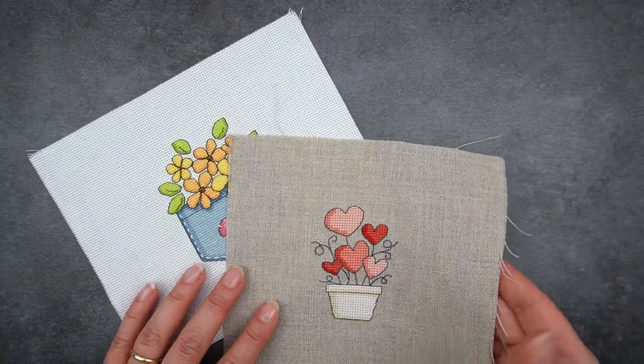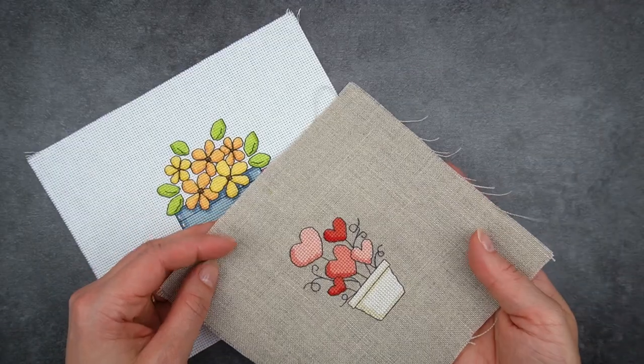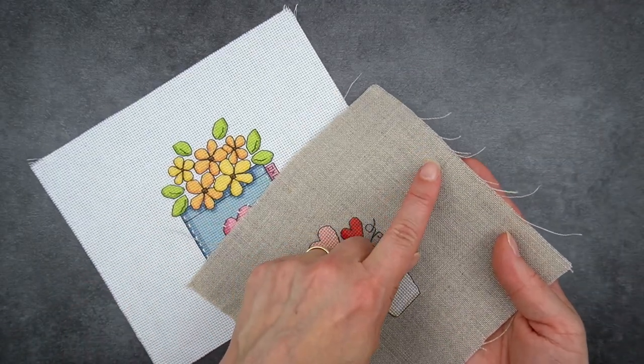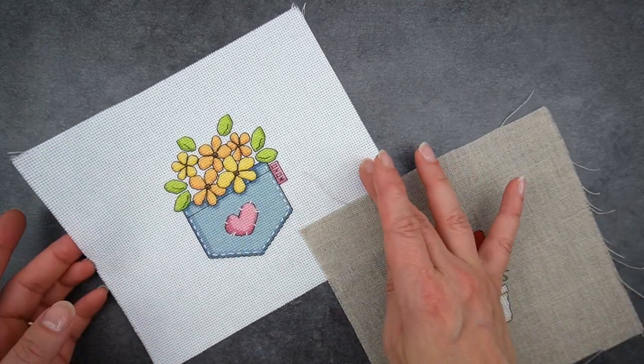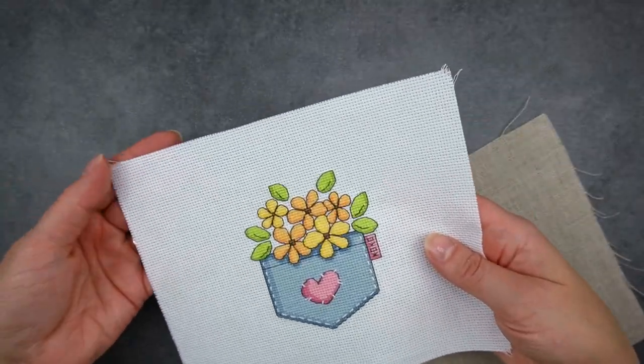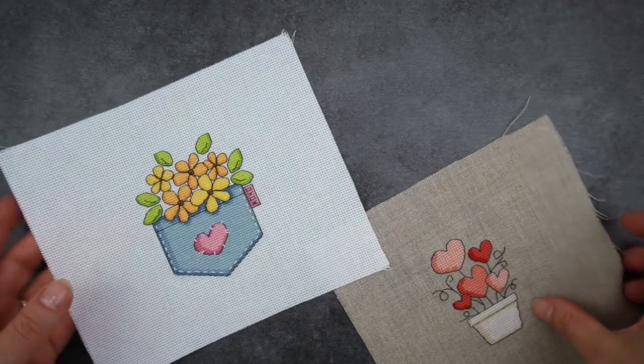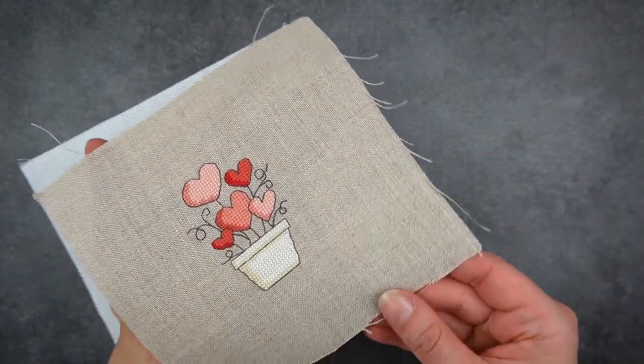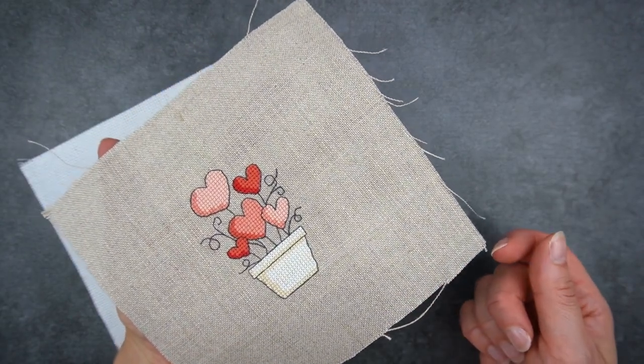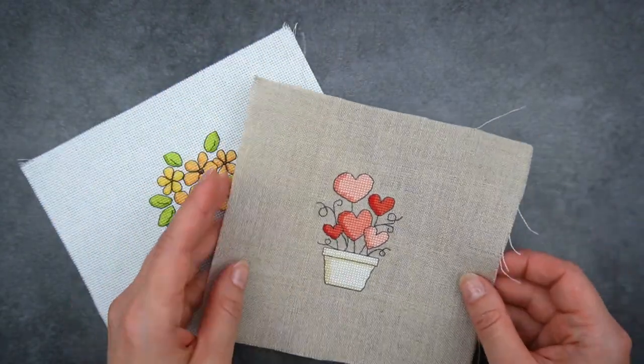The next difference is that it frays like crazy. You can see the edge here which I obviously didn't prepare and for small projects on Aida you can often get away with it. You can see how little this one's actually frayed while I was stitching it but this one has frayed quite a bit.